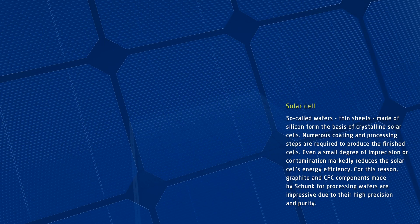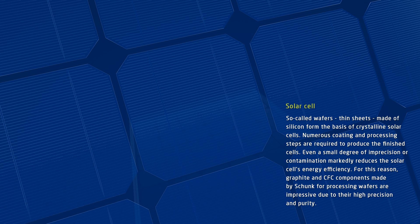The thin sheets of silicon used as the base plates for solar cells are called wafers. In numerous coating and processing steps, silicon wafers become solar cells, which are then integrated into solar modules.